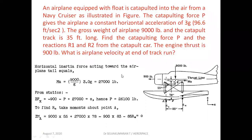An airplane equipped with floats is catapulted into the air from a Navy cruiser as illustrated in the figure. The catapulting force P gives the airplane a constant horizontal acceleration of 3G, that is 3 into 32.2, which is 96.6 feet per second squared. The direction of force is also mentioned in the figure, acting in the float. The gross weight of the airplane is 9,000 pounds and the catapult track is 35 feet long.